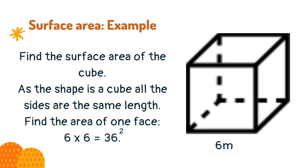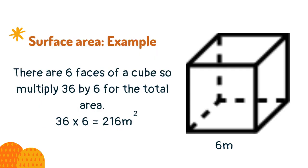Find the surface area of the cube. As the shape is a cube all the sides are the same length. Find the area of one face. 6 times 6 equals 36. There are 6 faces of a cube so multiply 36 by 6 for the total area. This means that the surface area is 216 meters squared.